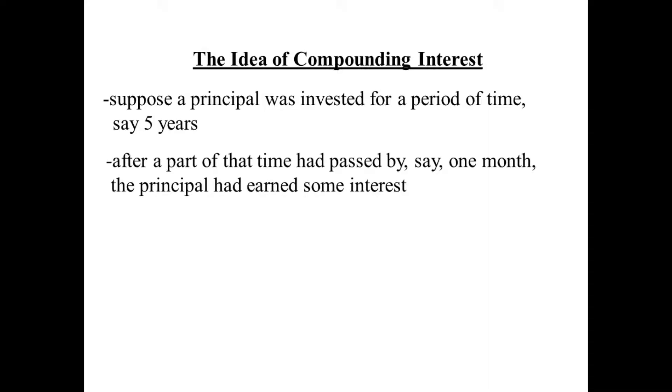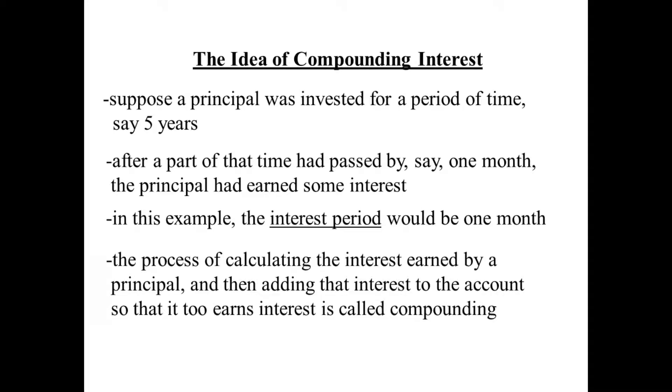The idea of compounding. Suppose a principal was invested for a period of time, say five years. After a part of that time has passed by, say one month, that principal has earned some interest. In this example, the interest period would be one month. Because we're examining the investment after one month. The process of calculating the interest earned by a principal and then adding that interest to the account so that it too begins to earn its own interest, this is called compounding.